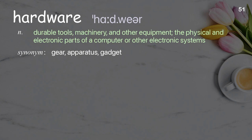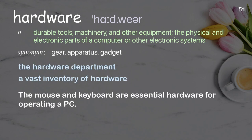Hardware: durable tools, machinery, and other equipment; the physical and electronic parts of a computer or other electronic systems. Examples: the hardware department, a vast inventory of hardware. The mouse and keyboard are essential hardware for operating a PC.